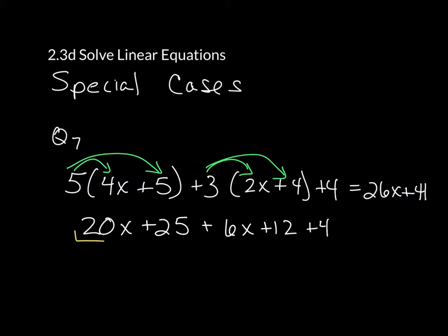So first thing I'm going to combine all of my variables. 20x plus 6x equals 26x. And now I'm going to go ahead and add my numbers. 25 plus 12 plus 4 is equal to 41.